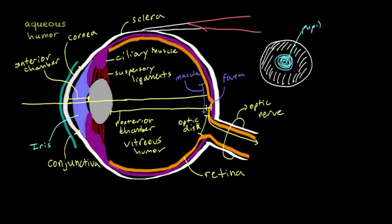Underneath the retina is a purplish-pinkish membrane known as the choroid. The choroid is a pigmented layer of tissue that is rich in blood vessels and supplies the retina with oxygen and nutrients. It's pigmented black in humans, which allows excess light entering the eye to be absorbed by the black pigment. Cats, for example, don't have this black pigment — their choroid is shiny and reflects light back to the retina, providing them with better night vision. That's also why if you look inside a cat's eyes it's shiny, versus a human's eyes which look black.